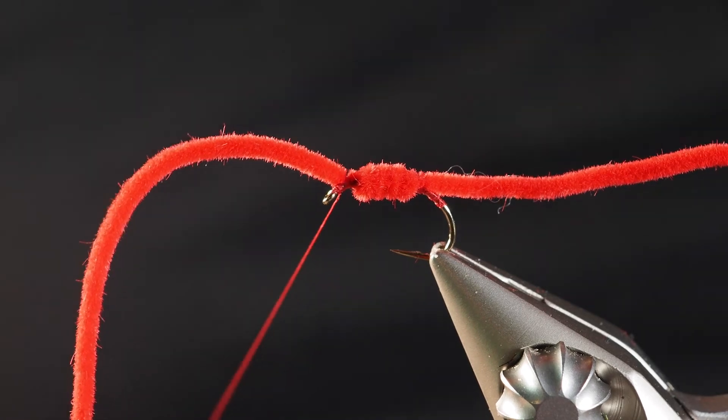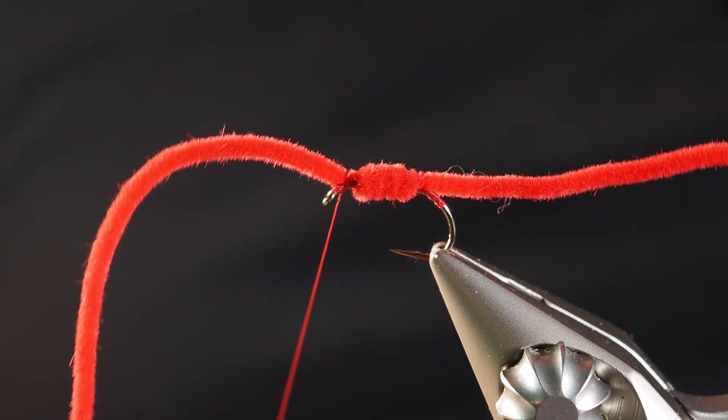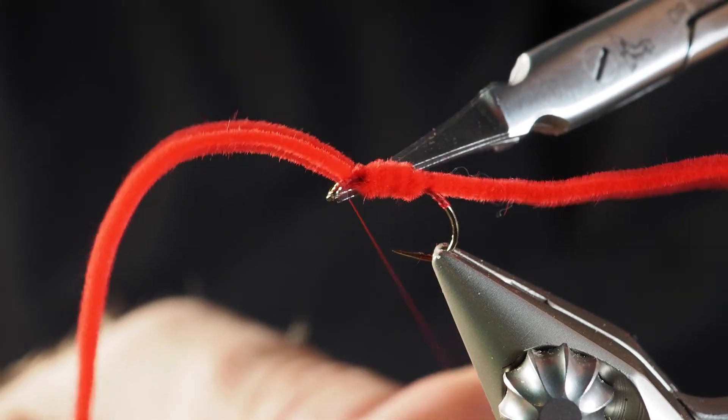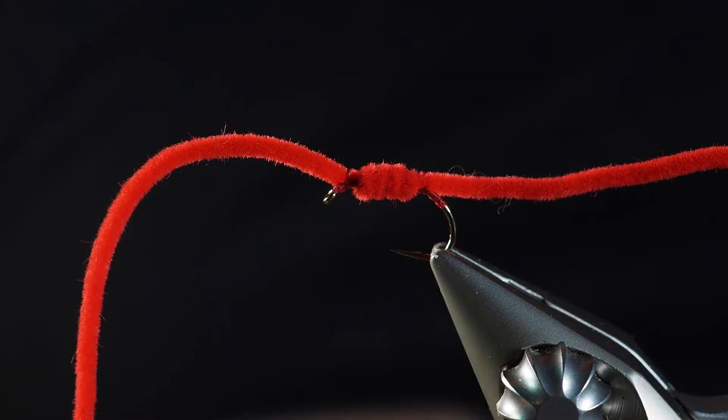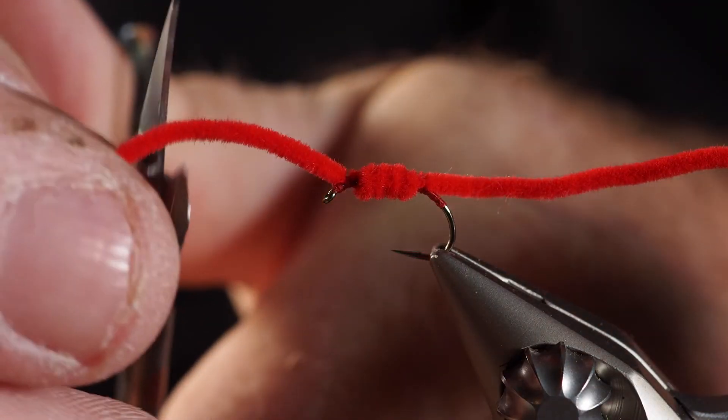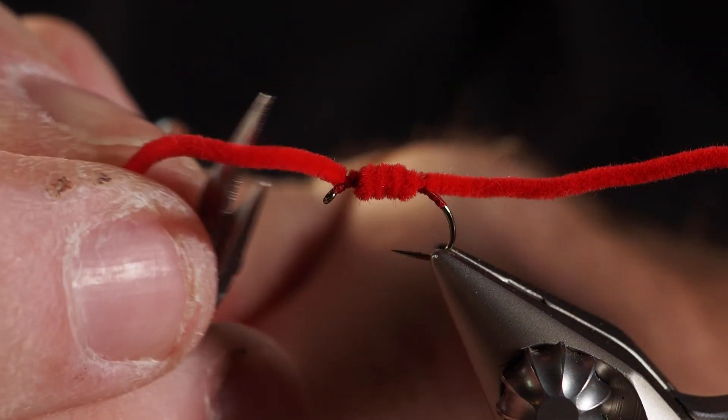From there we're going to go ahead and try to find our scissors. We'll cut that thread off here really nice and close. The front side of it I don't want nearly as long as the back side of it, so I'm going to cut that off, you know, just maybe a hook length.